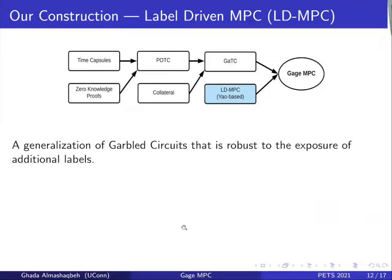Gauge Time Capsules allow committing to the input labels needed for the computation. However, we still need a protocol to perform the computation itself over these inputs. For this reason, we introduce what we call Label-Driven MPC, which is a generalization of garbled circuits that is robust to the exposure of additional labels.